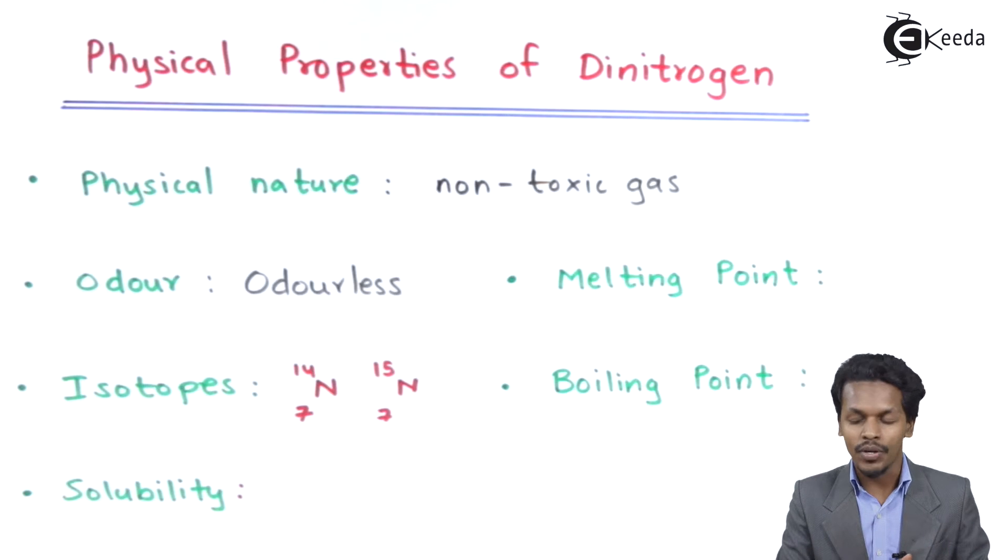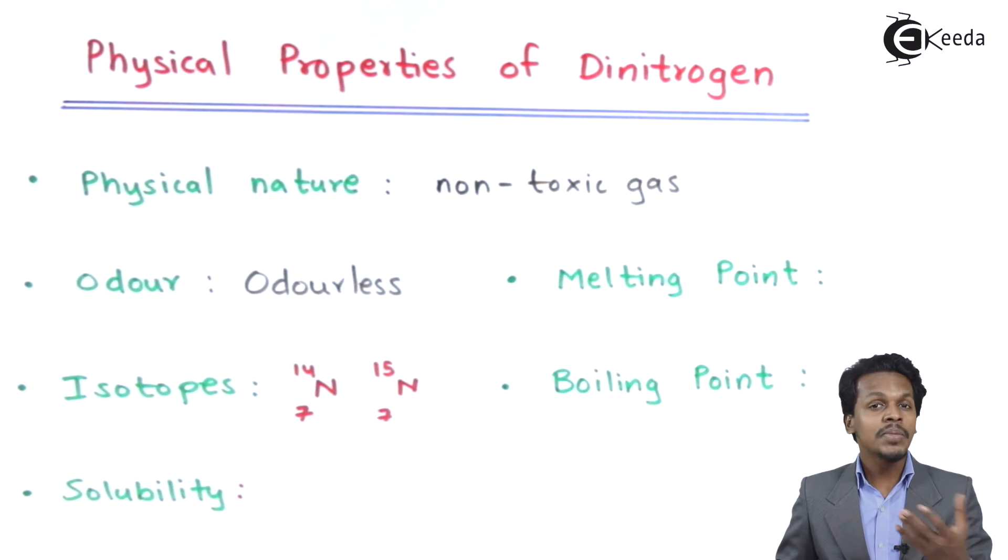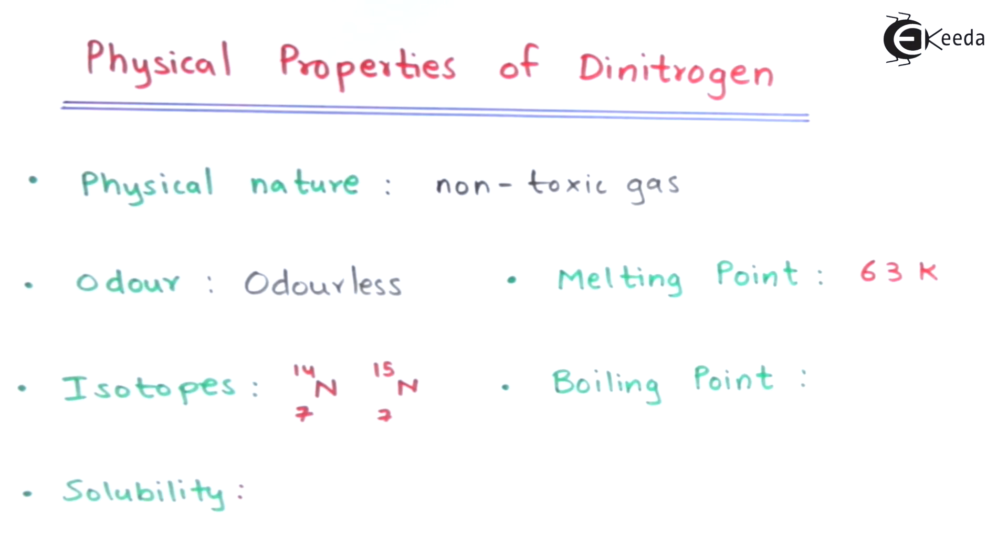Now let me talk about the other two physical constants, that is melting point and boiling point. It has been found that the melting point of dinitrogen is 63 kelvin, whereas talking about the boiling point it has been found to be 77.3 kelvin, which is extremely less.